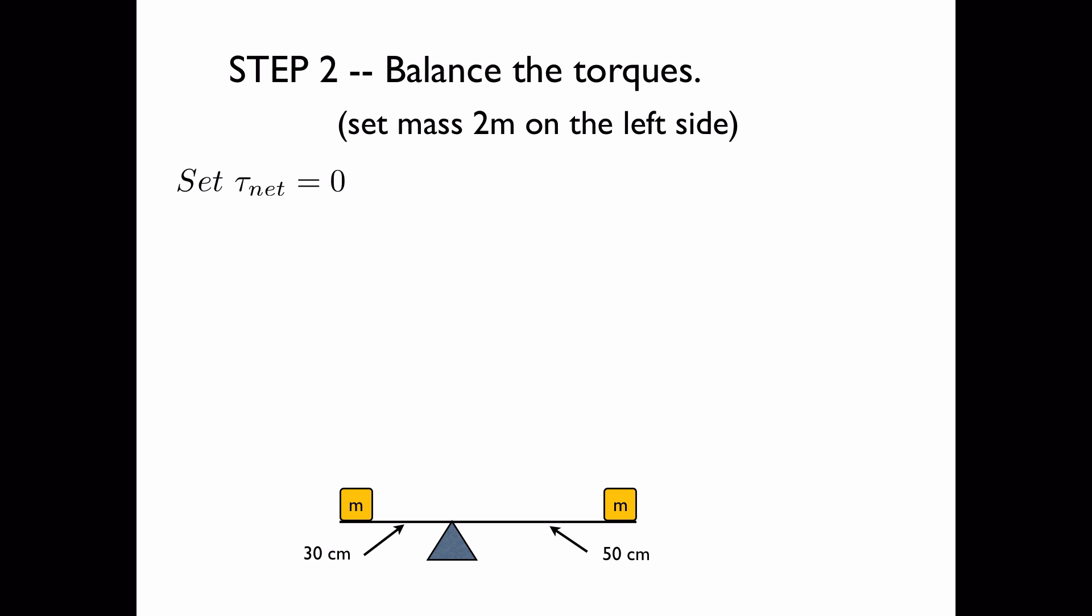When you balance the torques you set the net torque equal to zero. The net torque is equal to the original net torque which we found to be negative mg times 0.2 plus the torque due to the block of mass 2m which is 2m times g times the radius which is what we're looking for.